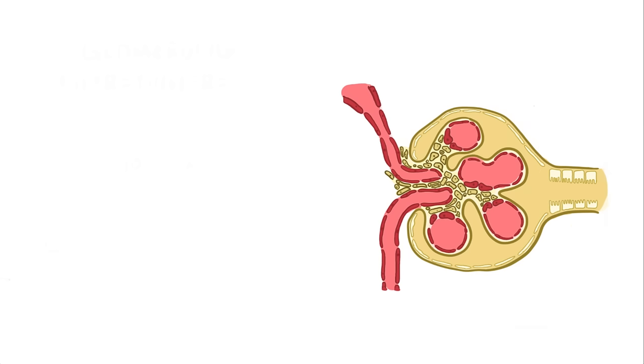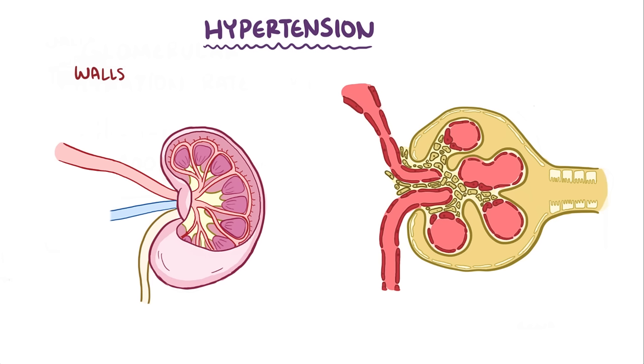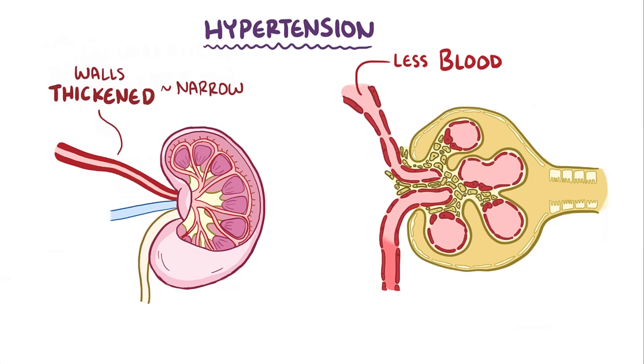One of the most common causes of chronic kidney disease is hypertension. In hypertension, the walls of arteries supplying the kidney start to thicken in order to withstand the pressure, and that results in a narrow lumen. A narrow lumen means less blood and oxygen gets delivered to the kidney, which leads to ischemic injury to the nephron's glomerulus.